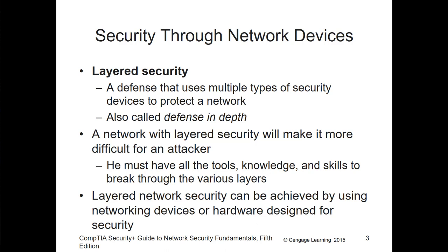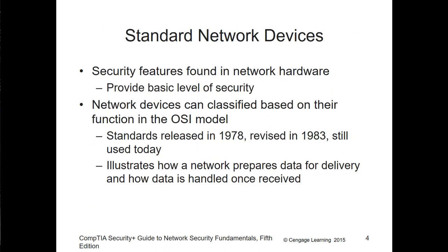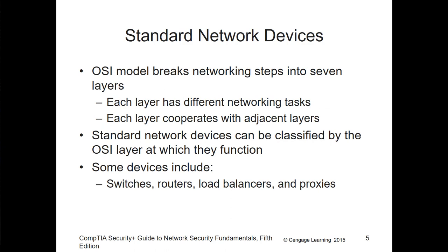A layered network security can be achieved by many different types of devices, depending on your environment. Security features found in network hardware today provide a basic level of security. Network devices can be classified by their OSI model layer — layer 1, 2, 3, or physical, data link, network, transport, session, presentation, application, and so forth. Layer 1 is physical wiring; layer 2 deals with switches; layers 3 and 4 cover routers, firewalls, and some proxies.